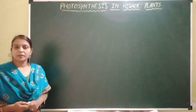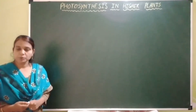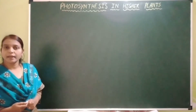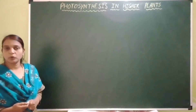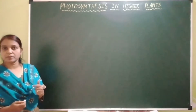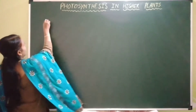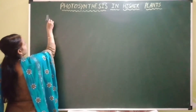Hello students. In the previous video we studied about different types of pigments — chlorophyll pigments and carotenoid pigments. In this video I am going to explain about absorption spectrum and action spectrum. Let's start with absorption spectrum.